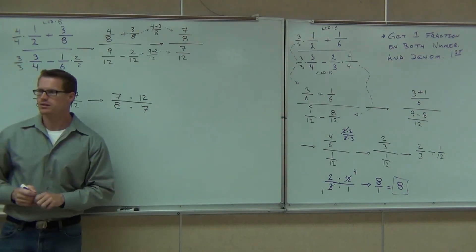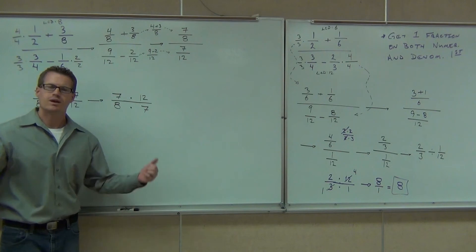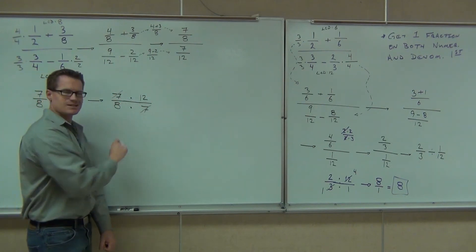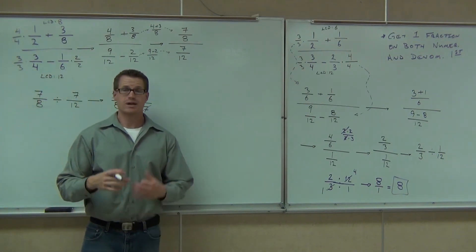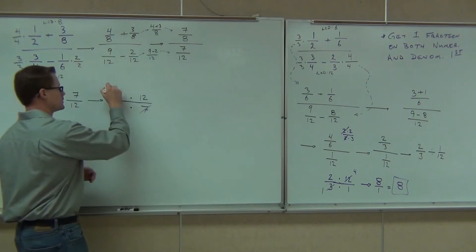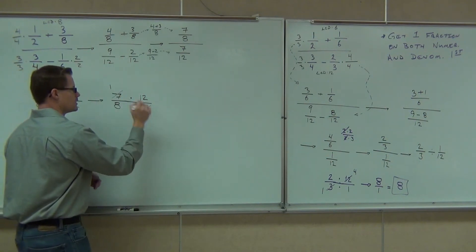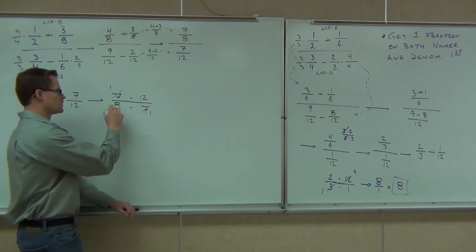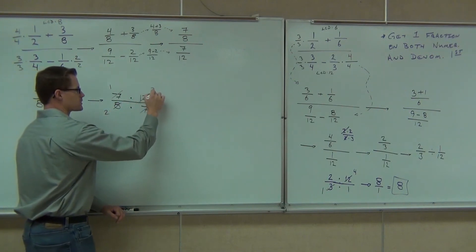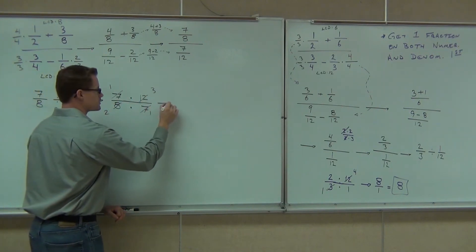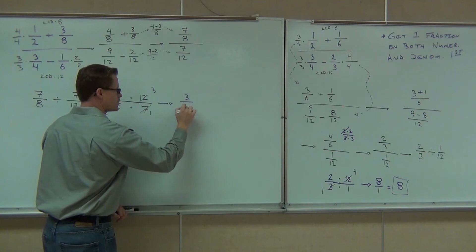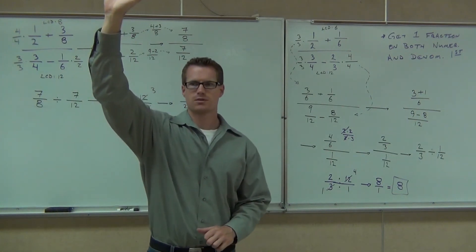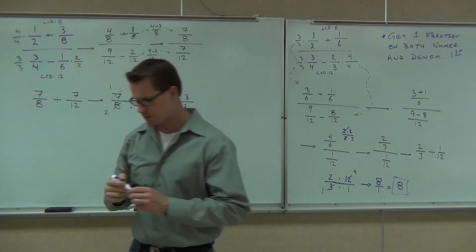What simplifies here? We can cross out the 7s. And the 8 and the 12 — what goes into both? 4. So 8 becomes 2 and 12 becomes 3. That gives us 3 halves. Let me see your hands if you've got that. Good job.